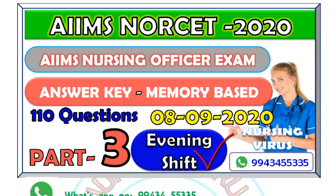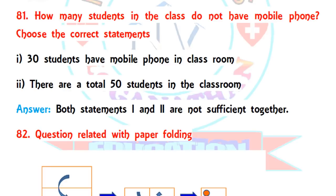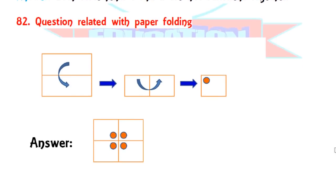The first question from the aptitude area: how many students in the class do not have a mobile phone? They gave two statements — one: 30 students have mobile phones in the classroom, and two: there are 50 students in the classroom. The correct answer is that both statements one and two are not sufficient together, because one student may have two or three mobiles and some students may not have any.